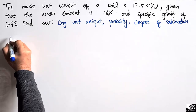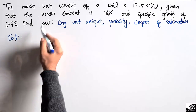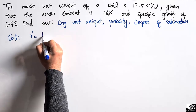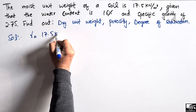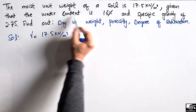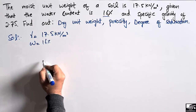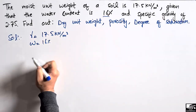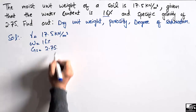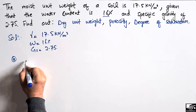Here we can write down the given data: the moist unit weight of the soil, gamma, is equal to 17.5 kN per cubic meter. The water content is 16% for this soil sample, and the specific gravity of the soil sample is 2.75.